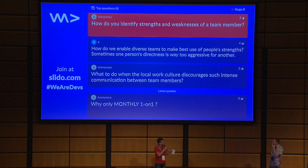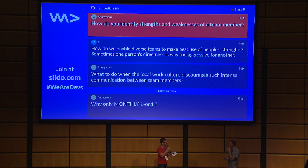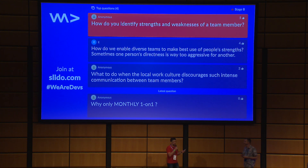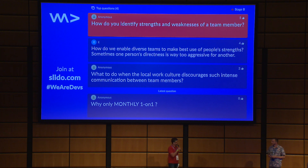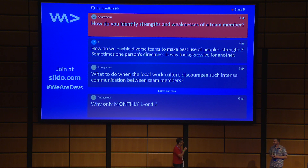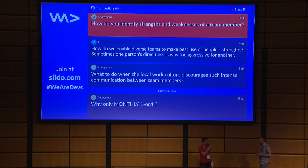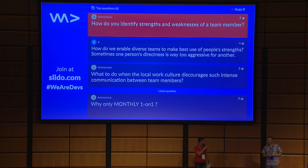One recommendation: there's an app called Wing Finder, surprisingly provided by Red Bull — it's at wingfinder.com. You can find your strengths and what you're not good at. We use this internally and you can use it too. It's private and secure. It really helps to identify your own strengths and those of your team members and direct reports, and it's rather easy to do.